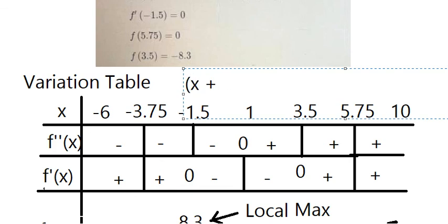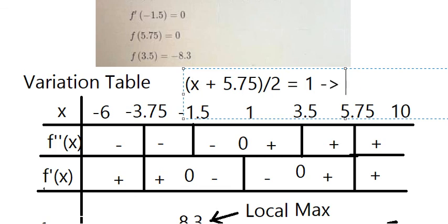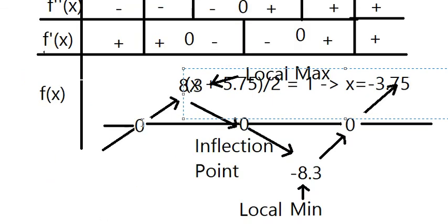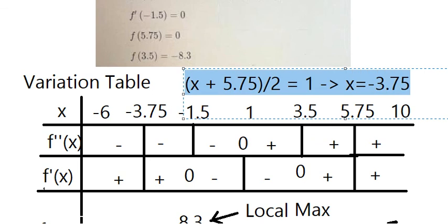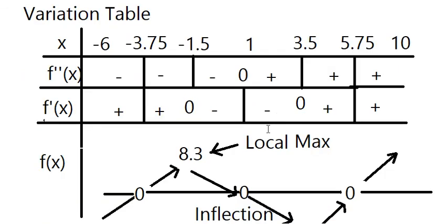Using the symmetry formula: S plus 5.75 divided by 2 equals 1, because the two numbers are symmetric. Solving for S gives minus 3.75. So at x equals minus 3.75, the value of function f will be 0.